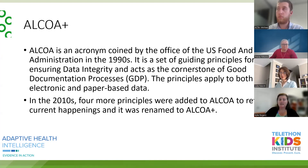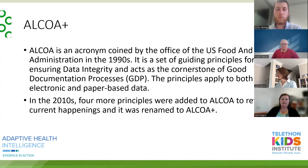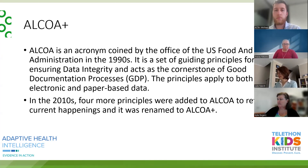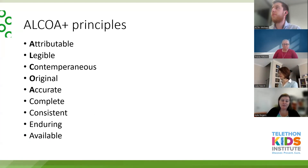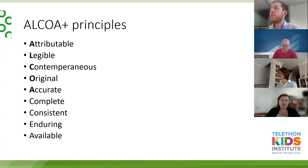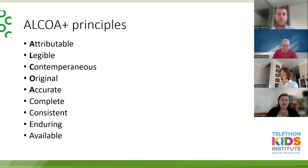The initial ALCOA was five guiding principles, and then four more were added — coining the term ALCOA Plus. The first principle is 'Attributable' — can it be shown who entered the data and who made any changes? 'Legible' — you should be able to read the data. For paper studies, is it legible? For electronic studies, is the data in a format that is usable?